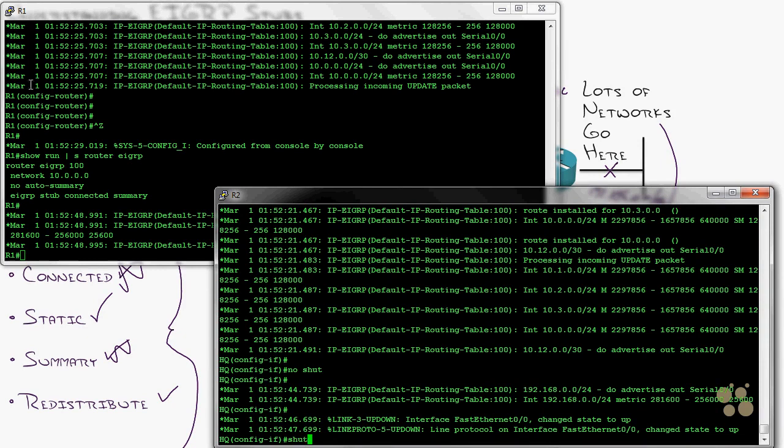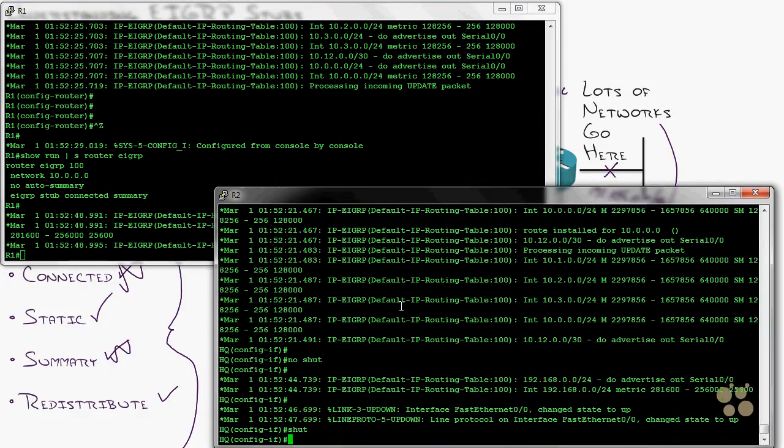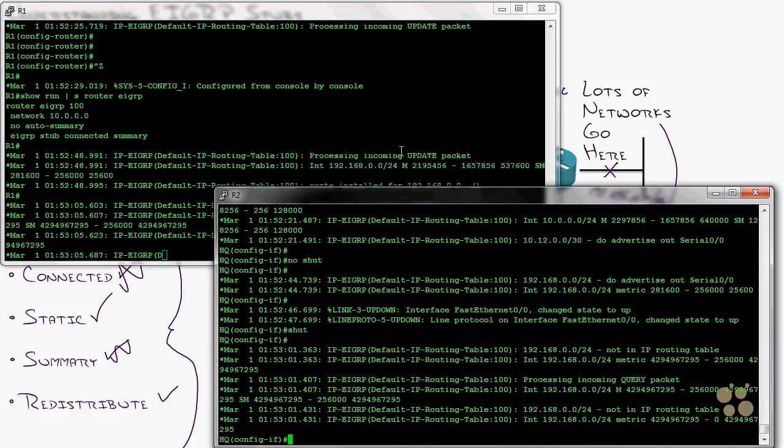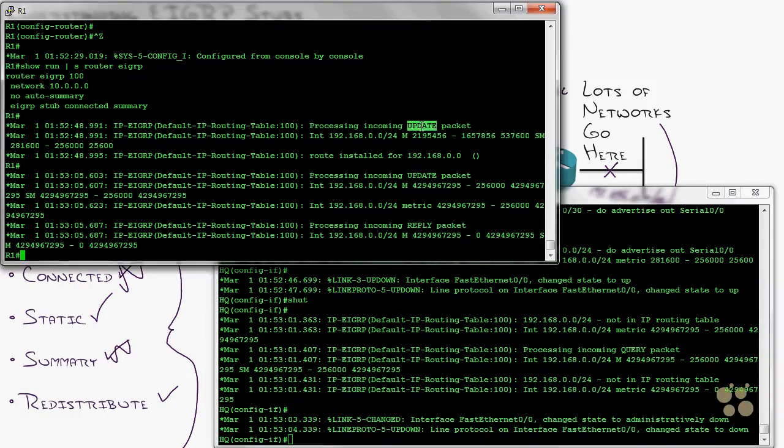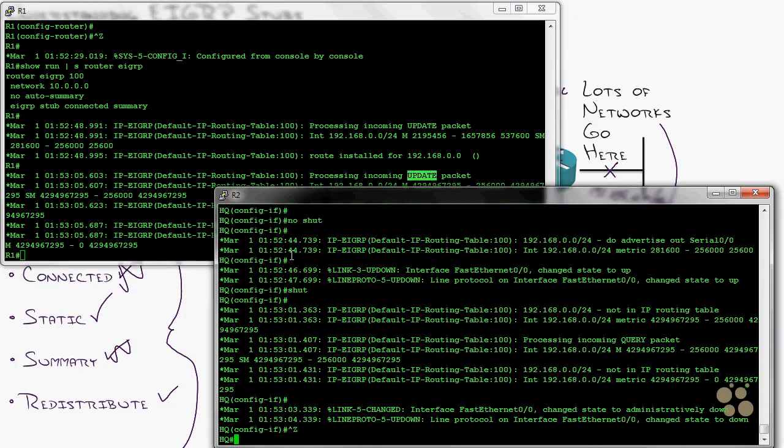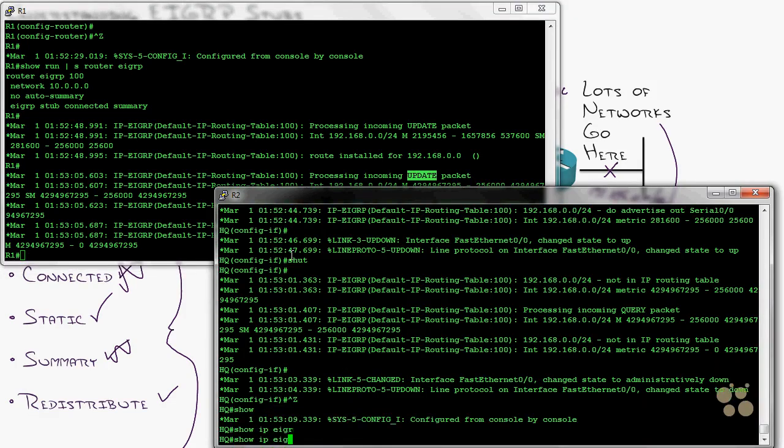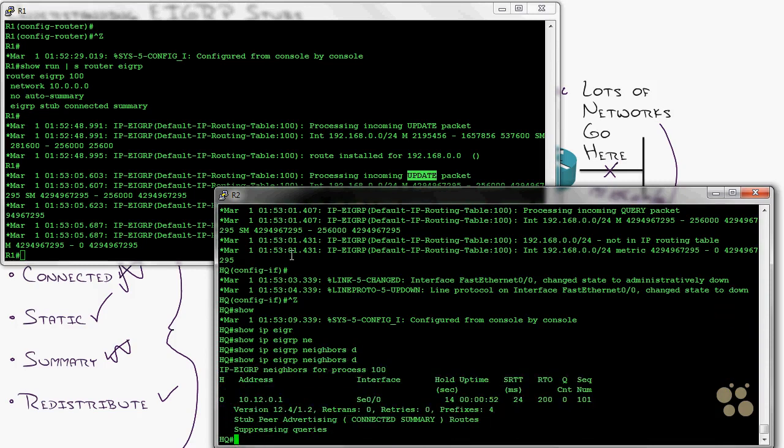Notice update, update, no query message is actually sent. I'm going to do a show IP EIGRP neighbor. Let's do detail. You can see right there. This guy's coming in saying he is a stub peer saying I only can advertise connected in summary routes and suppressing queries over to that neighbor.